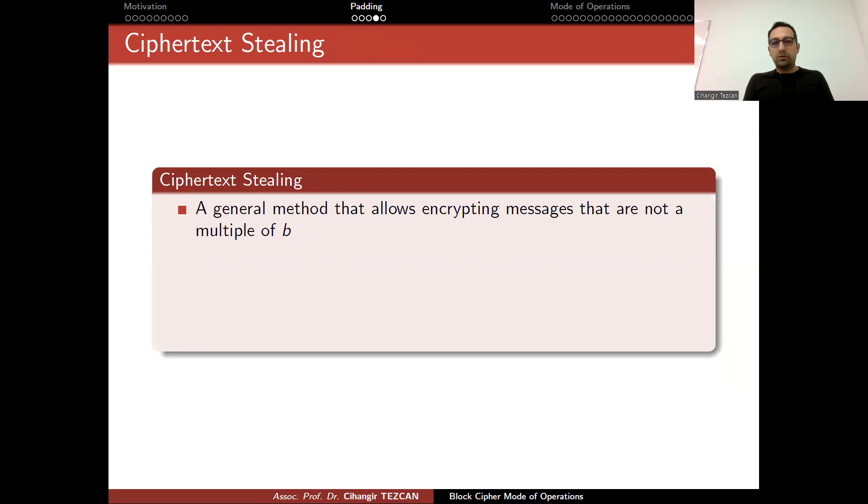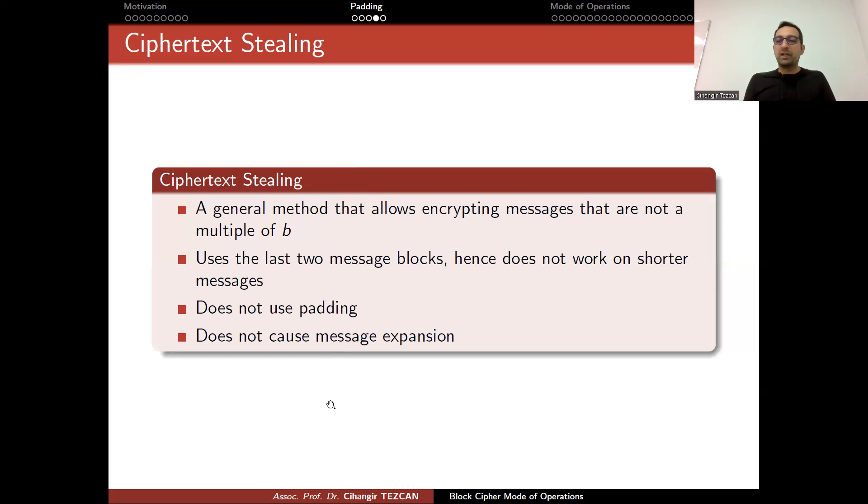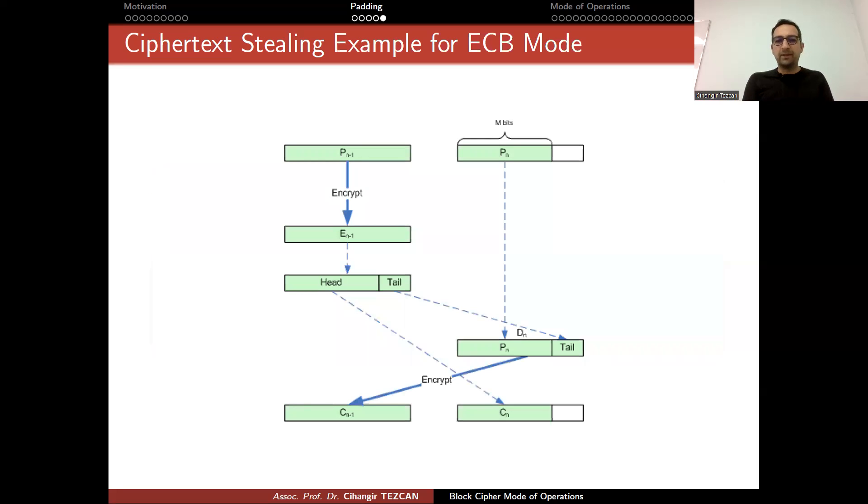Let's conclude this discussion of padding by introducing a different technique where you don't have to cause message expansion. This is called ciphertext stealing. The name is sometimes misleading - people think this is related to cryptanalysis or something, but it is not. This is a very simple technique where you don't want to increase the size of your message. A general method that allows encrypting messages that are not a multiple of B is called ciphertext stealing. It uses the last two message blocks, hence does not work on shorter messages. You cannot use ciphertext stealing on a single block. You have to have at least two blocks. It does not use padding, so it does not cause message expansion.